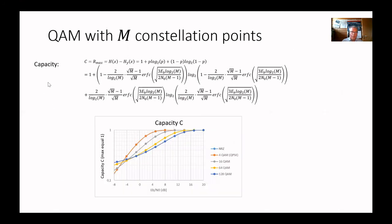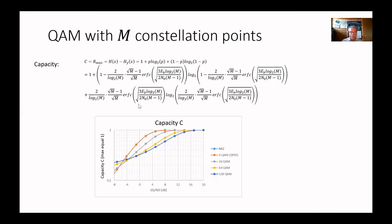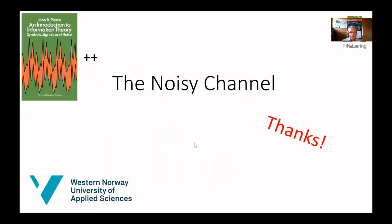I also calculated the capacity of QAM using the formula we found. I put in the values and got an expression for capacity C as a function of Eb/N0. As expected, NRZ and 4-QAM overlap each other, and as you go to higher modulation orders the capacity drops off earlier. This was the last slide for the noisy channel — I hope you have learned something. I find it very interesting. Bye bye for now.